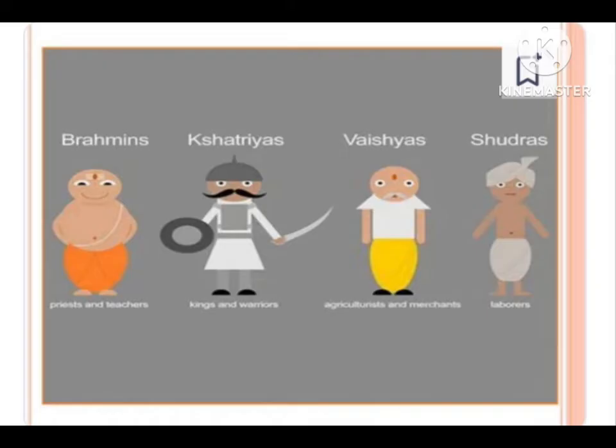The social classes were: Brahmins — priests and teachers; Kshatriyas — kings and warriors; Vaishyas — agriculturalists and merchants; and Shudras — laborers.